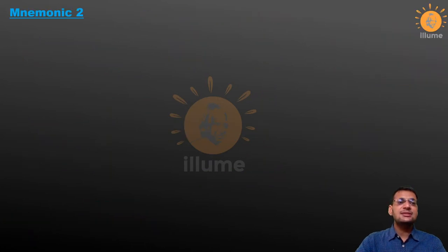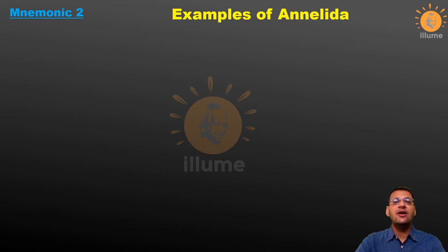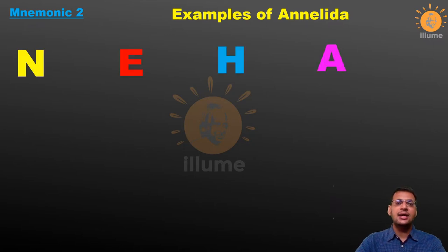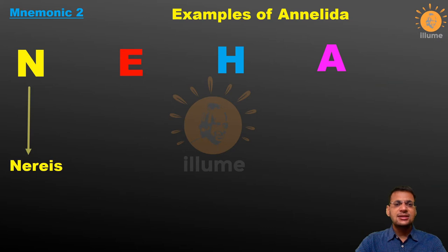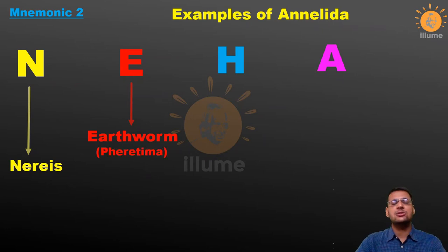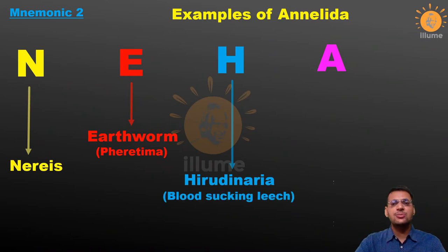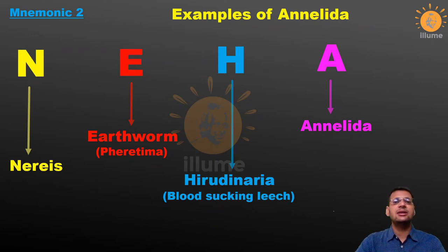Let us proceed with the second mnemonic, which will help us remember the examples of Annelids. You just have to remember the name of a girl called Neha, which is an Indian girl's name. N stands for Nereis, E stands for Earthworm — the most common example of Annelids, whose zoological name is Pheretima. H stands for Hirudinaria, which is the blood-sucking leech. The last A stands for Annelids. So just remember your friend Neha, and she will help you remember Nereis, Earthworm, and Hirudinaria — all examples of Annelids.